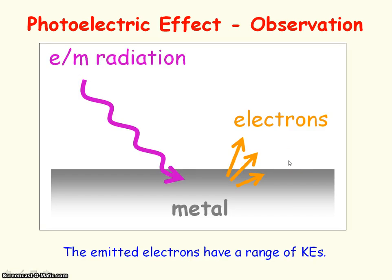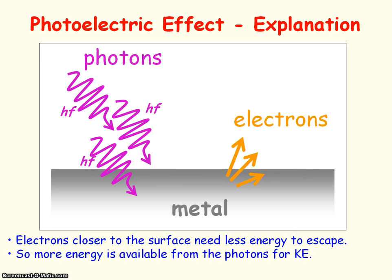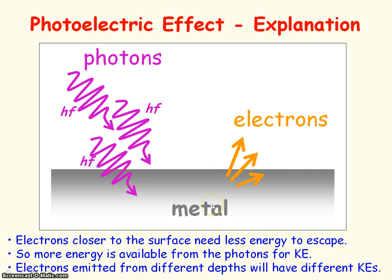Another observation was that all electrons didn't have the same kinetic energy — they had a range of kinetic energies. This is because electrons closer to the metal surface needed less energy to escape, so more energy from the photon was available for kinetic energy, giving them higher kinetic energy. Electrons deeper in the metal surface needed more energy to escape and so had less kinetic energy.